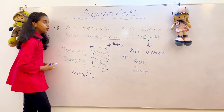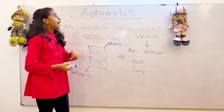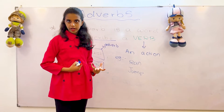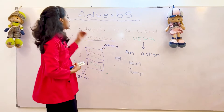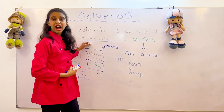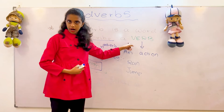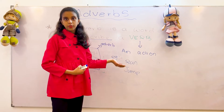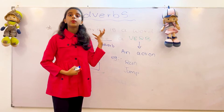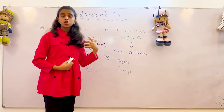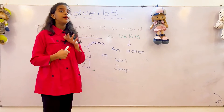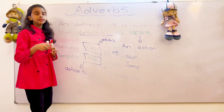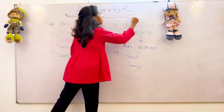So what is an adverb again? An adverb is a word that you use to describe a verb. What is a verb? A verb is an action. So the word we use to describe a verb is called an adverb.